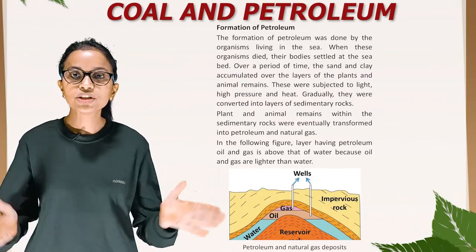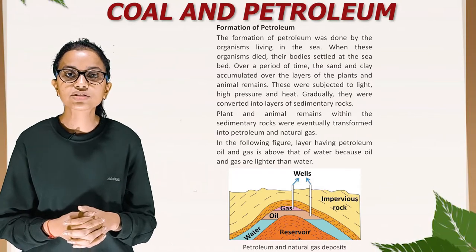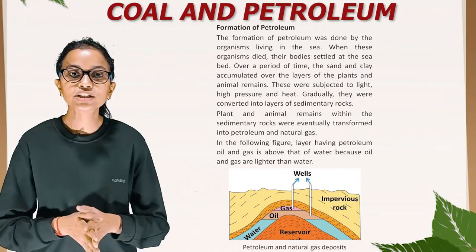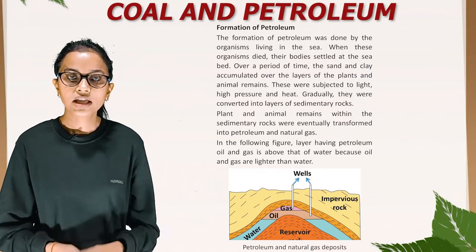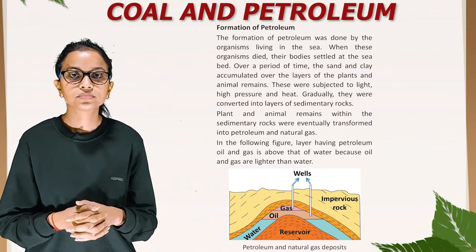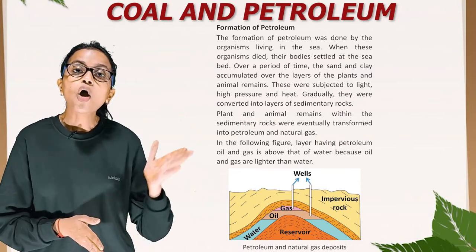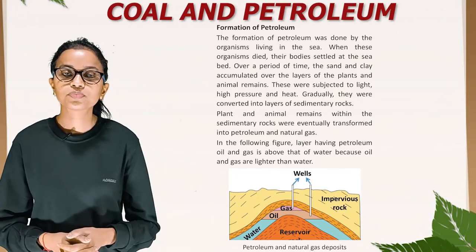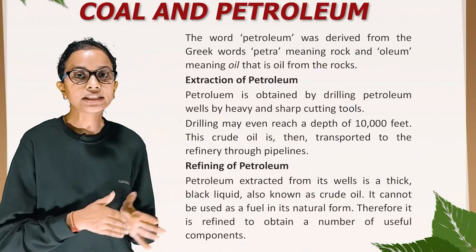Formation of petroleum: The formation of petroleum was done by organisms living in the sea. When these organisms died, their bodies settled at the sea bed. Over a period of time, sand and clay accumulated over the layers of plant and animal remains. These were subjected to light, high pressure and heat, and gradually converted into layers of sedimentary rocks. Plant and animal remains within the sedimentary rock were eventually transformed into petroleum and natural gas. In the diagram, the layer having petroleum, oil and gas is above water because oil and gas are lighter than water. The word petroleum was derived from the Greek words petra meaning rock and oleum meaning oil — that is, oil from the rocks.